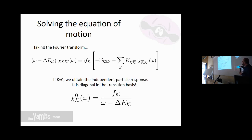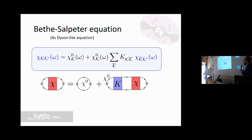If we set K to zero — no electron-electron interaction — this equation reduces to the independent-particle response function, where the peaks are given by the energy difference between conduction and valence states. But K is not zero, so when we collect all terms we get a Dyson-like expression for the Bethe-Salpeter equation, which is where we left off in the previous talk.